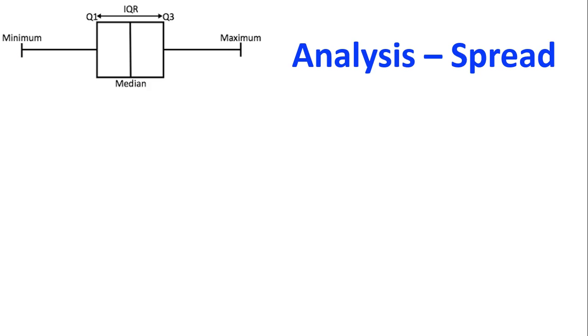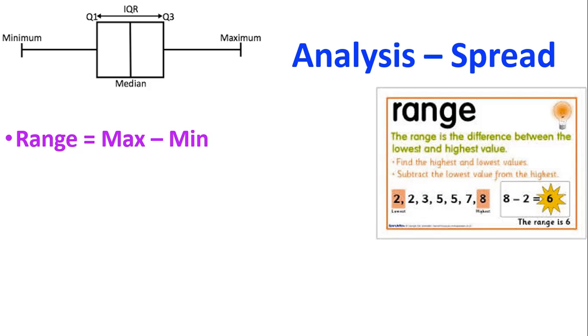We then want to have a look at analysis for the spread, what kind of calculations and measurements we use for spread. That's looking at how spread out the data is. And we've got this measure of range, which is your overall maximum, biggest number, take away the minimum, which is your smallest number. So you can see there from that little example, the biggest number is the number eight, the smallest number is number two, so our range is eight take away two, which is six.